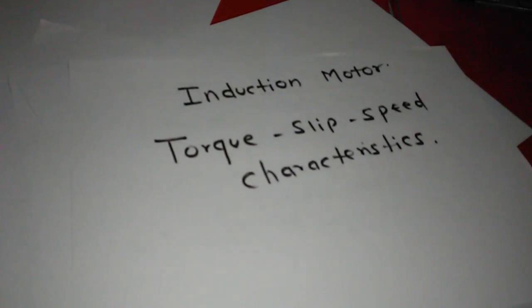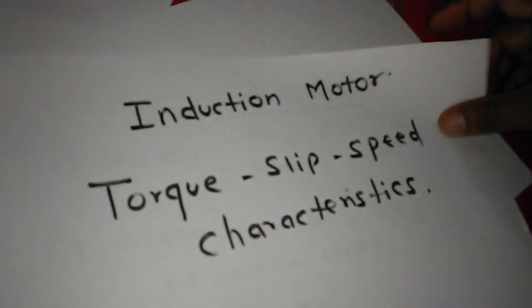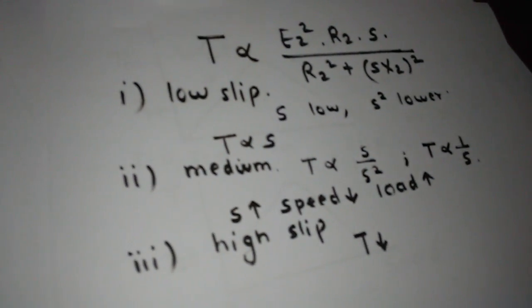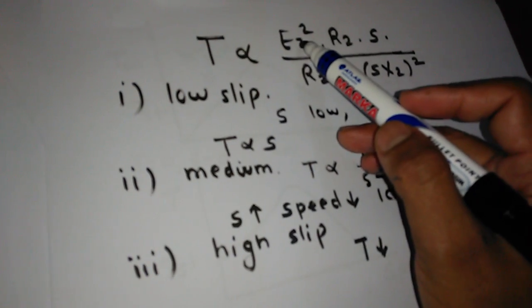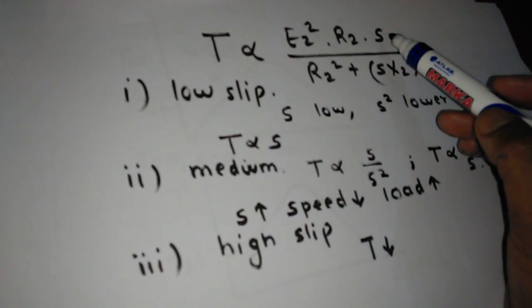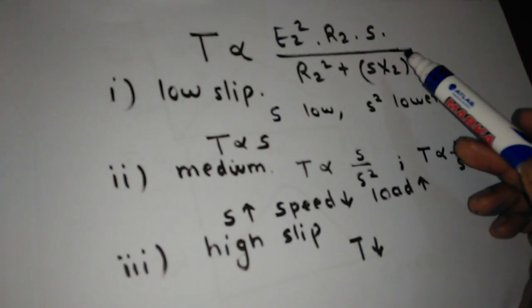Today we are discussing the torque-slip speed characteristic of induction motor. From torque equations we can see torque is proportional to supply voltage squared, rotor resistance, and slip S. From this equation we can find out the torque-slip characteristics.